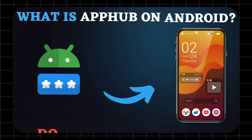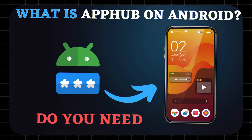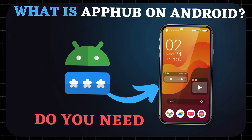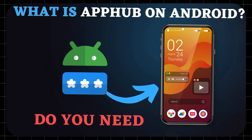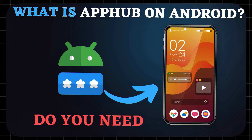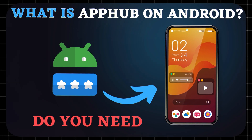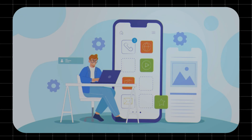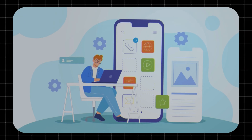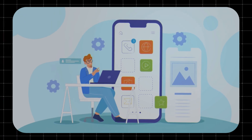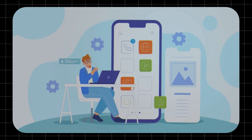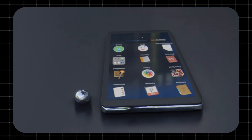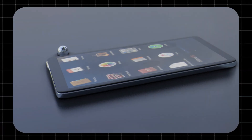What is AppHub? AppHub can mean different things depending on your device, but on most Android phones it's a pre-installed carrier app, often from T-Mobile or Sprint, designed to manage and distribute apps and promotions to your device. It's not essential for your phone's basic functions, but some users find it intrusive because it may prompt frequent app installations or updates.